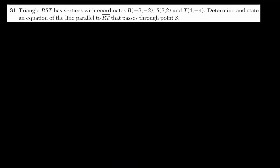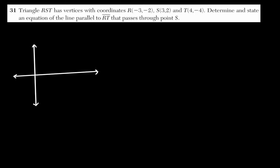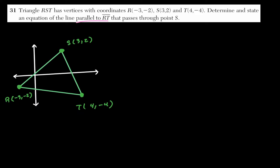In question 31, we have triangle RST where R is at (−3, −2), S is at (3, 2), and T is at (4, −4). We want to find the equation of a line parallel to RT that passes through point S.